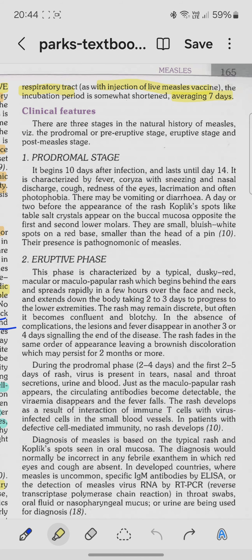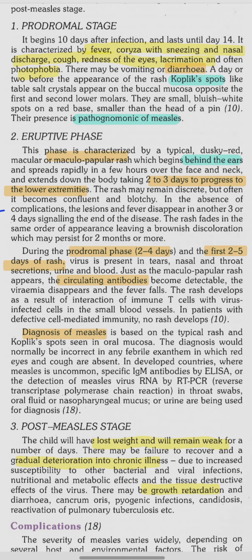The clinical features occur in three stages: the prodromal stage, the eruptive phase, and the post-measles stage. The prodromal stage lasts around two to three days, beginning 10 days after infection and lasting until day 14. It is characterized by fever, coryza, sneezing, nasal discharge, cough, redness of the eye, and possibly diarrhea.